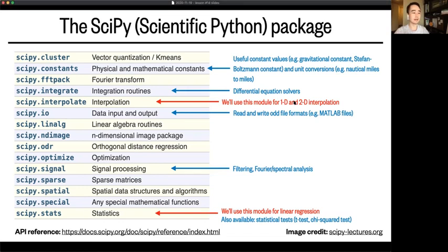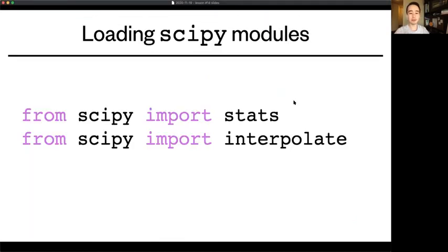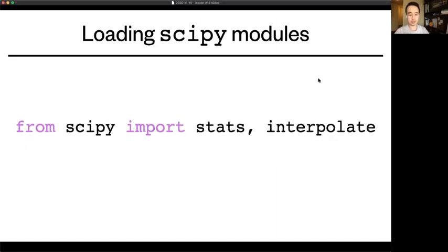Similar to datetime, we import modules from a package using the syntax from scipy import stats, and then from scipy import interpolate. These are the two modules we'll be using today. You can also do this more efficiently, like this, from scipy import stats, comma interpolate.